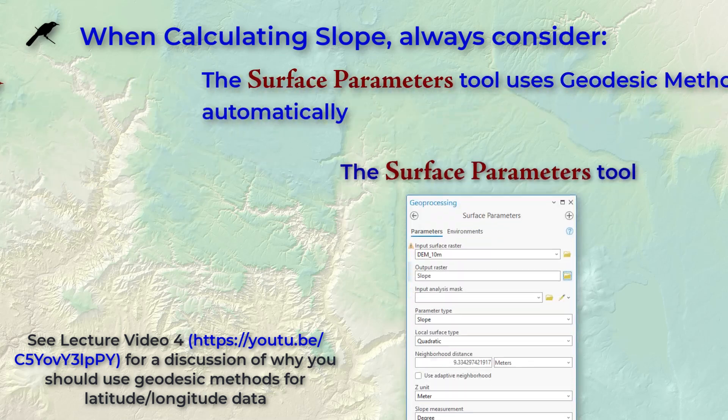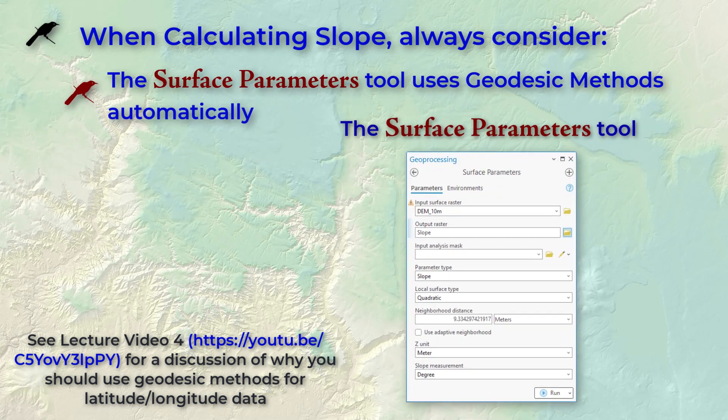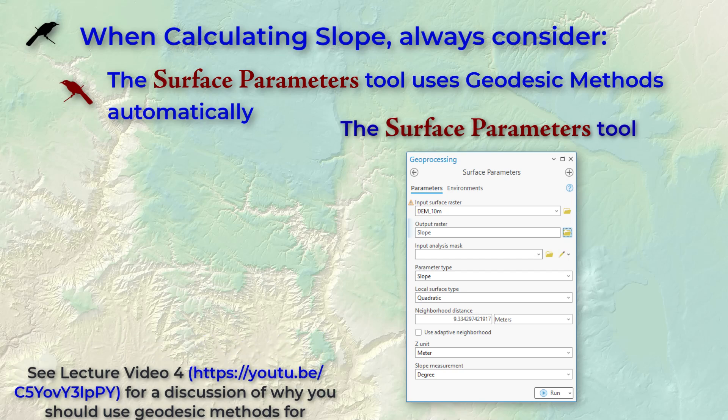If you're using the surface parameters tool, then you don't need to worry about the coordinate system. The surface parameters tool will automatically use geodesic methods, regardless of what coordinate system your DEM is in. If you want to know more details about the problems with using geographic latitude-longitude data without geodesic methods, take a look at the fourth lecture video in this module where I discuss common issues with raster data.